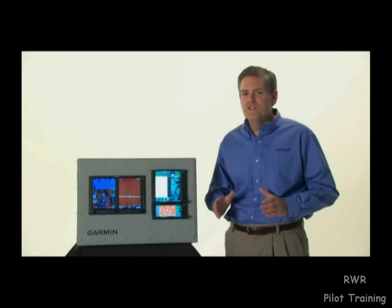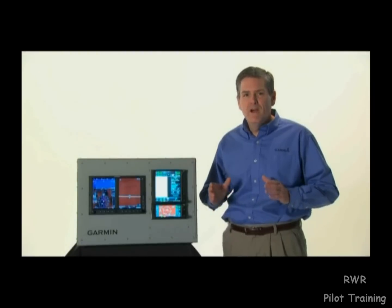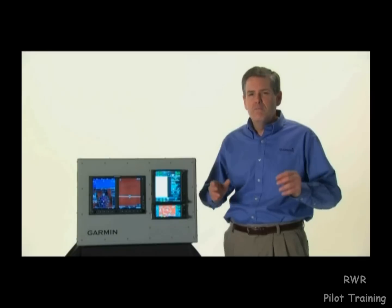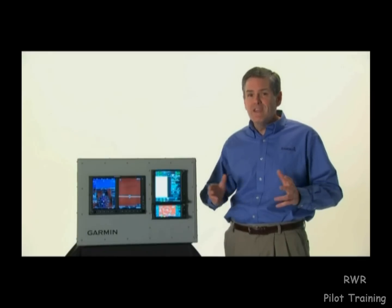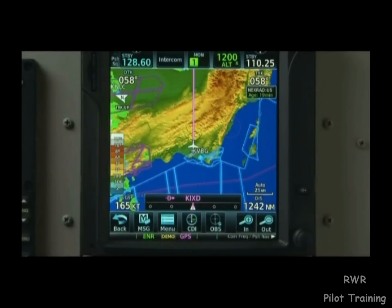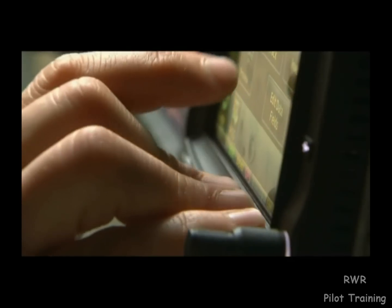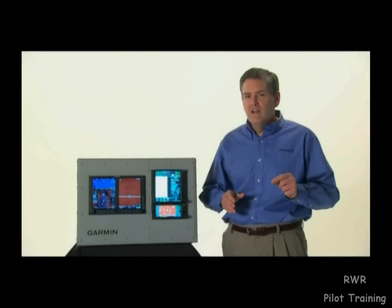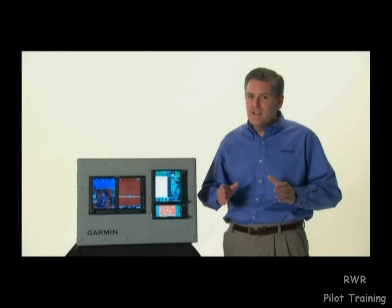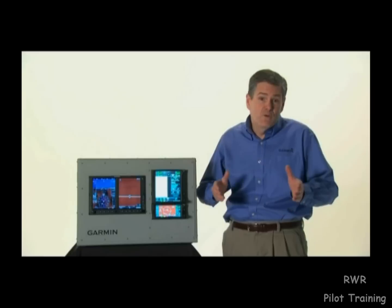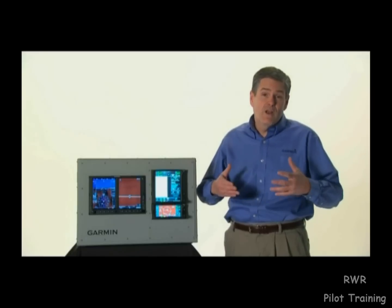As you become more familiar with the GTN, you'll find that most functions can be accessed with just a few flicks of the finger. To make touchscreen data entry even easier, we've built in a bezel along the sides of the screen and a finger rail at the bottom of the screen for hand stabilization. Garmin's touch technology is designed to minimize accidental data entry due to fingers skipping or sliding across the screen in response to the aircraft in turbulence.